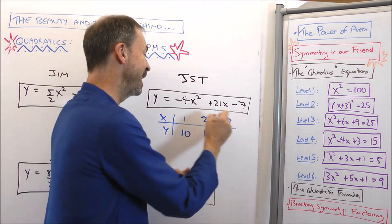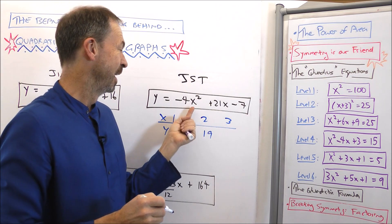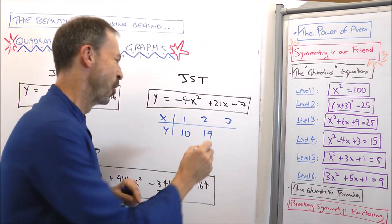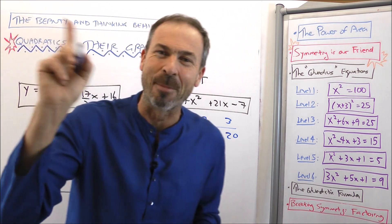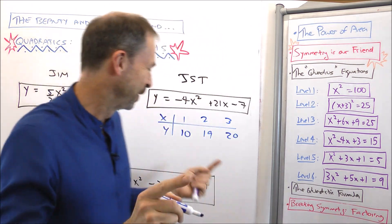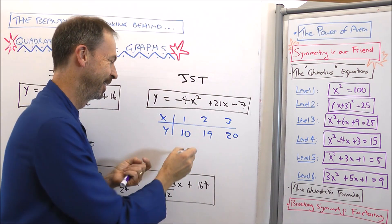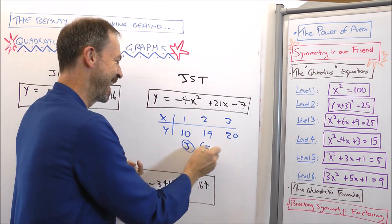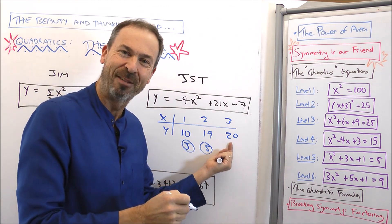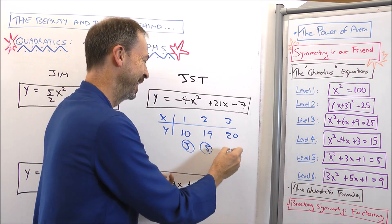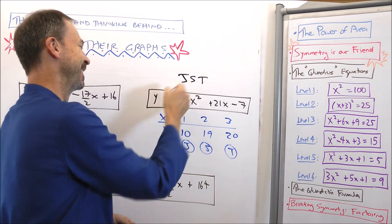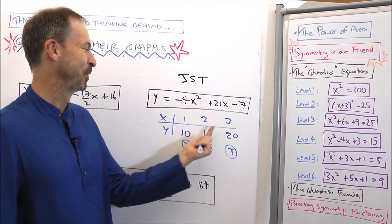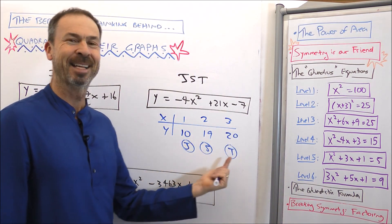And if I put in x equals 3, I get 20. The reason I know that — let me ask you this: what's the 10th letter of the alphabet? It's J. What's the 19th letter of the alphabet? It's S. What's the 20th letter of the alphabet? It's T. This is the quadratic that spells my initials! At least for x equals 1, 2, and 3, out comes J, S, T.